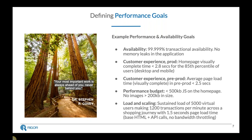Then we look at a customer experience goal in production — for example, homepage visually complete in less than 2.8 seconds for the 85th percentile of users across desktop and mobile. To measure this you want to look at both RUM and synthetic tooling, with RUM as the single source of truth. If the RUM system can capture a metric like visually complete, great — if not, synthetic will typically capture it.